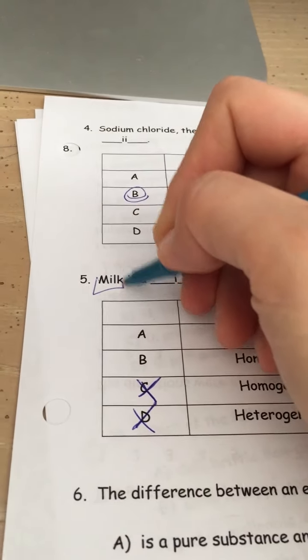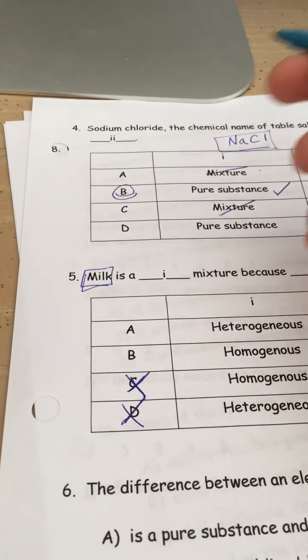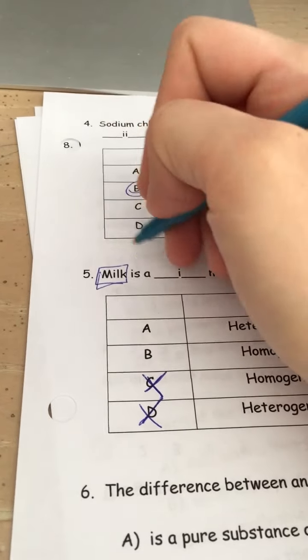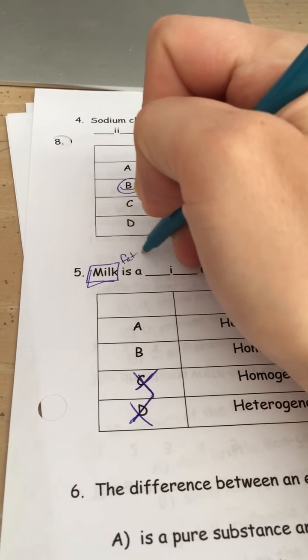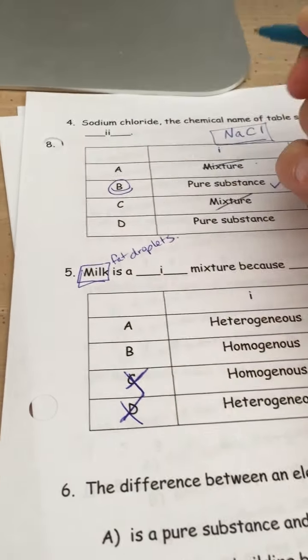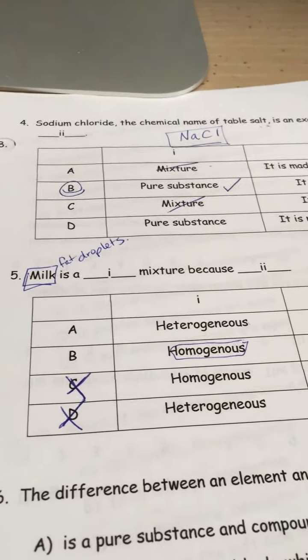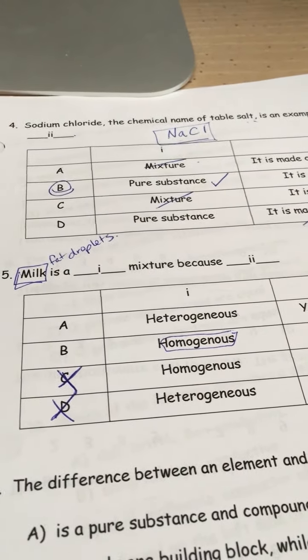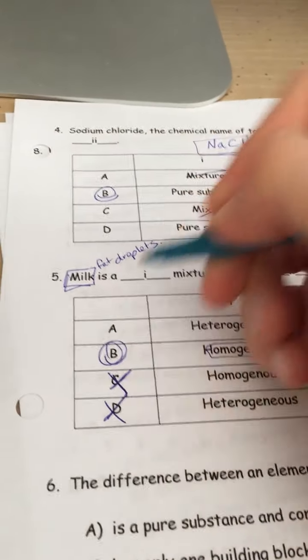So milk, we might need to ask if we don't remember exactly what milk is made of. But in the examples in class we discussed, milk has little fat droplets that are suspended throughout. So that would be a homogenous mixture because it appears to be one substance. It's all just one white liquid.